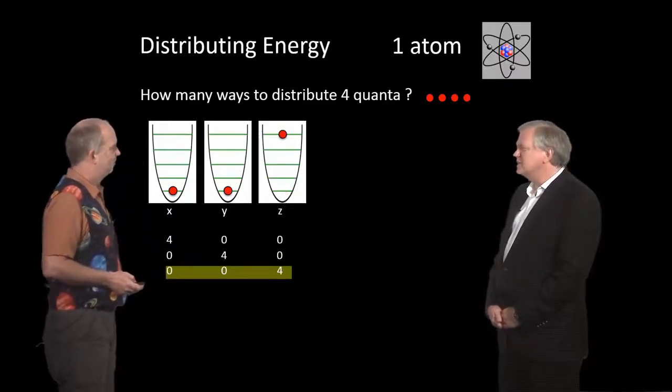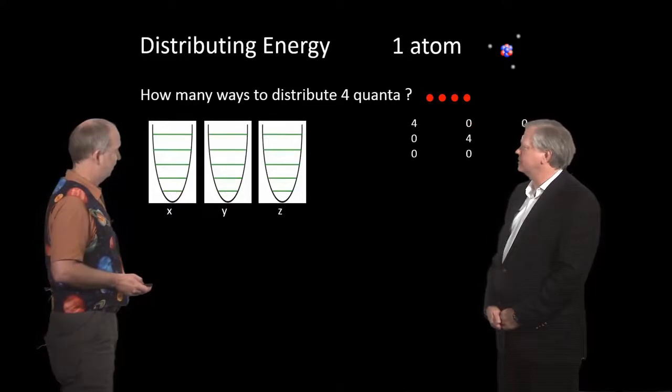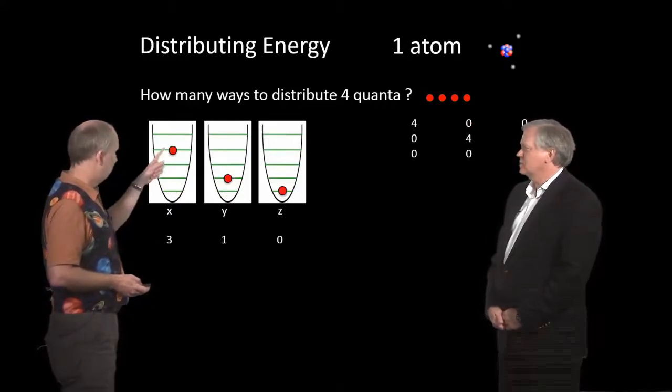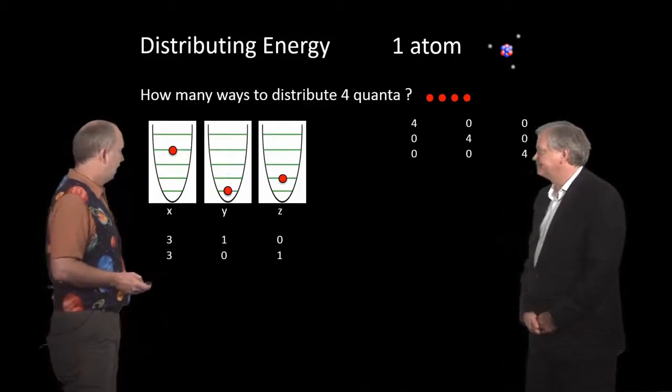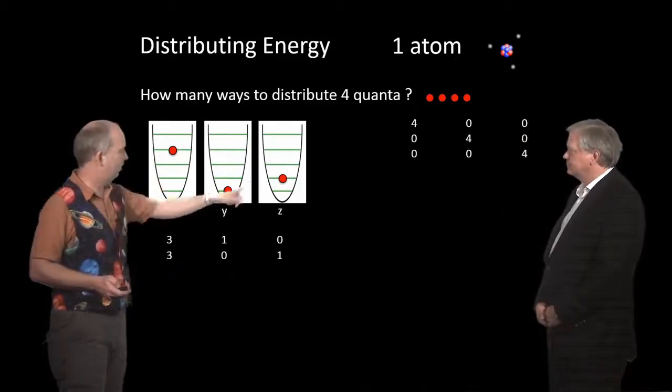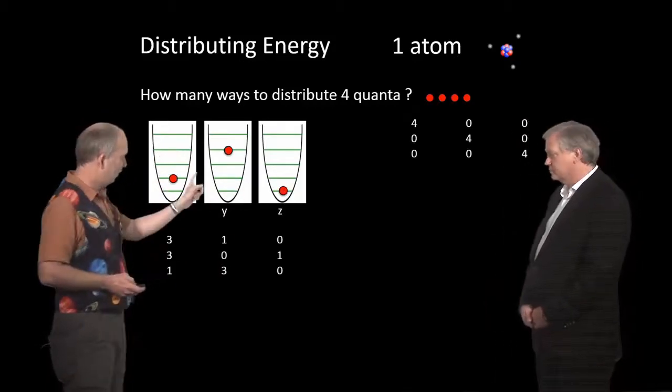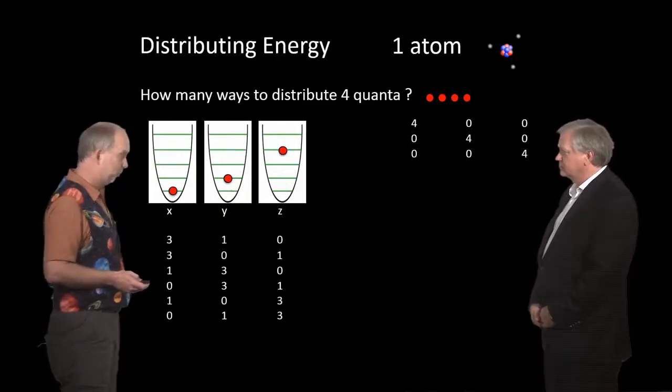Well then we can start splitting it, so maybe we'll do only part of it in x. Let's say we have three in x, one in y, zero in z. And then we can run the changes on that: three, zero, one, and so on. So we have a lot more possibilities now.